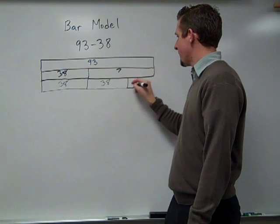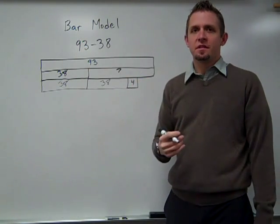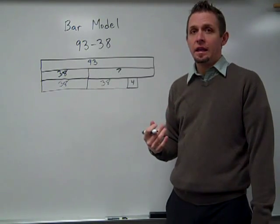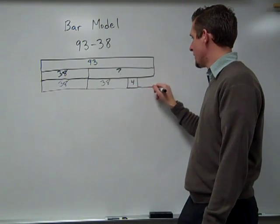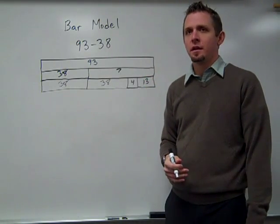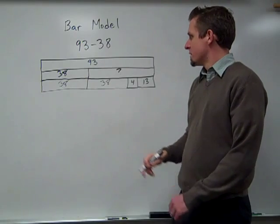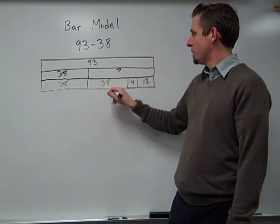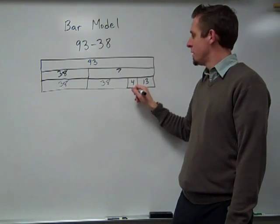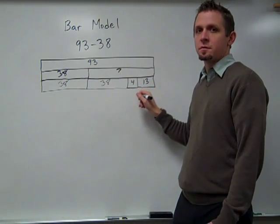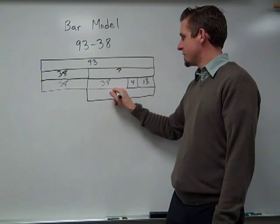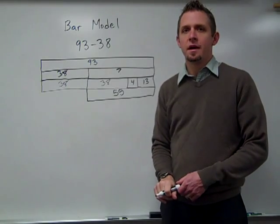Then I could add 4 to the 76 to get to 80. Then I would need to add 13 more to get to 93. 80 plus the 13 would give me 93. So then this distance right here would be the 38 plus the 4, which is 42, plus 13, which gives me 55. So the distance I have left to travel is 55 miles.